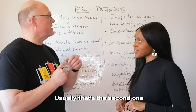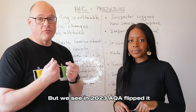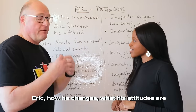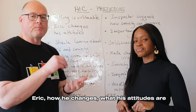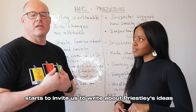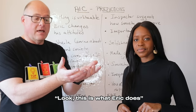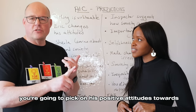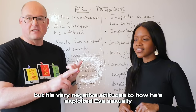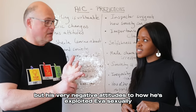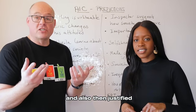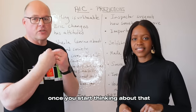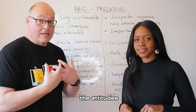I always tell my students to look for the society question — it's usually the second one. In 2018 the character question was Eric: how he changes and what his attitudes are. The word 'attitudes' invites you to write about Priestley's ideas — what Priestley thinks about Eric's attitudes. You pick on his positive attitudes, like not sacking Eva, but also his very negative attitudes: how he exploited Eva sexually, and then justified stealing from his father's business to keep doing so.